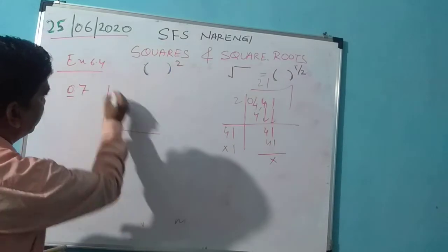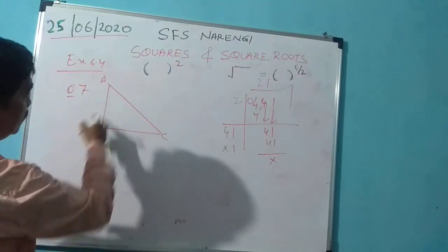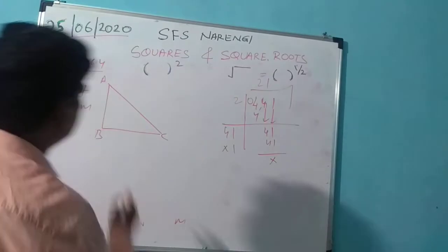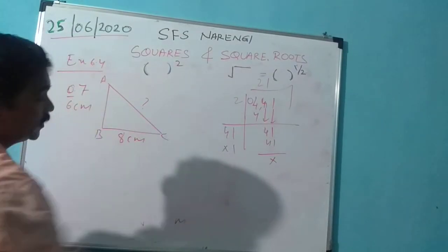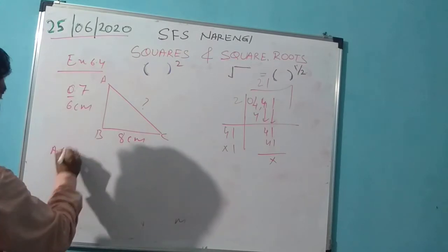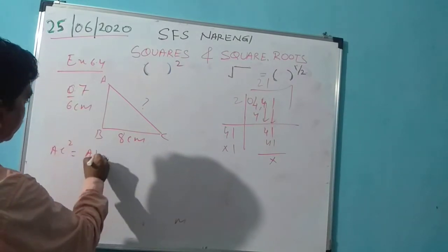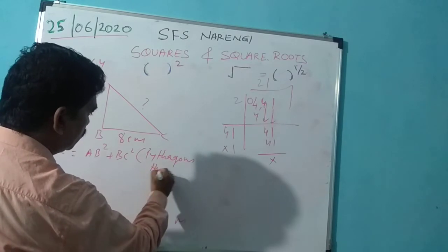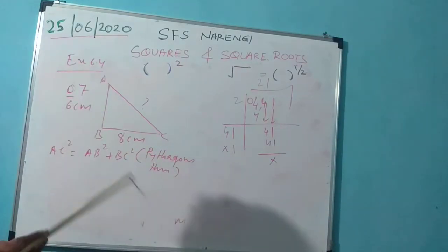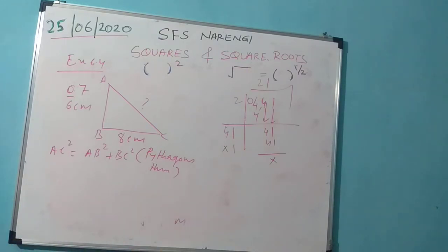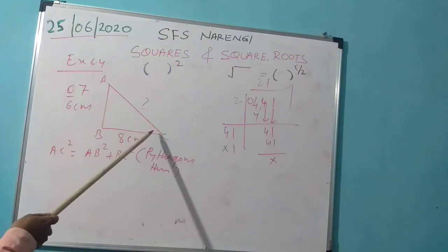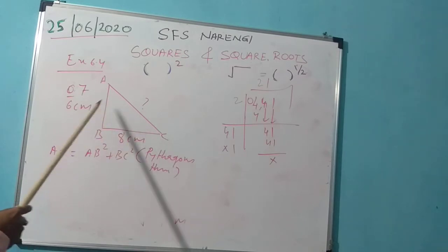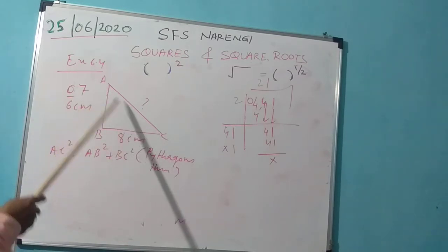Question number 7: you have a right-angle triangle where AB is given as 6 cm and BC is given as 8 cm. You have to find AC. By the Pythagorean theorem — applied to right-angle triangles — the square of the hypotenuse equals the sum of squares of the other two sides.